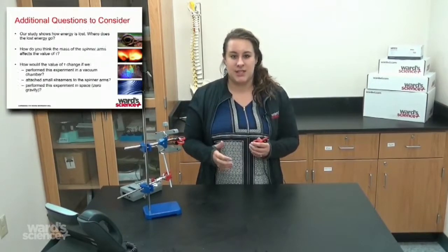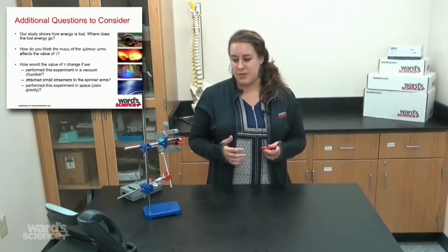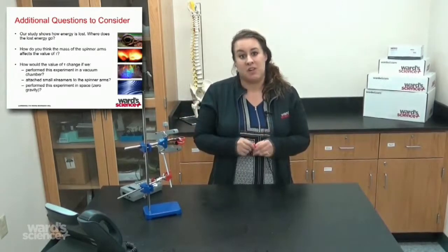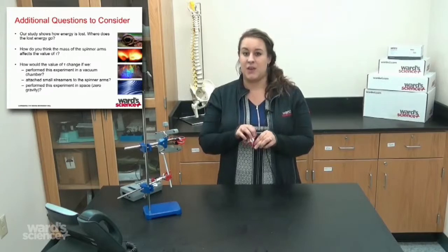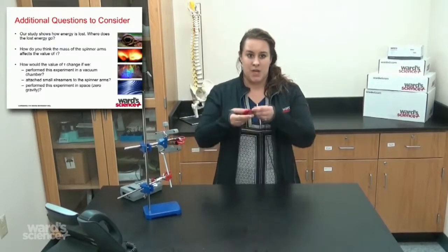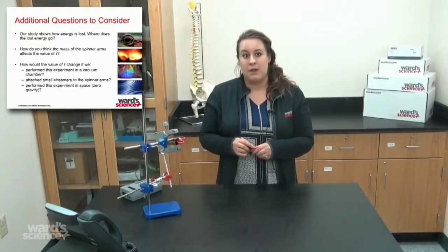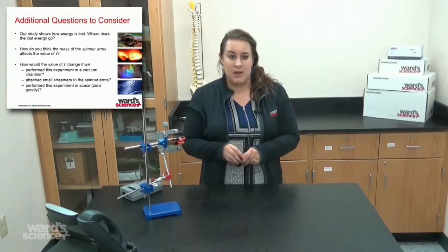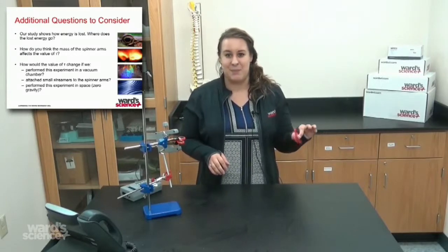There are some additional questions to consider in this experiment. Our study shows how energy is lost and the students can ask, 'Where does the lost energy go?' Very good question. Question number two: How do you think the mass of the spinner arms affect the value of t that we discussed on the previous slides? If the spinner arms were heavier or lighter, would that make a difference and why? How would the value change if we perform this experiment in a vacuum chamber? We do have those—well, we have a bell jar, that's kind of the same thing.